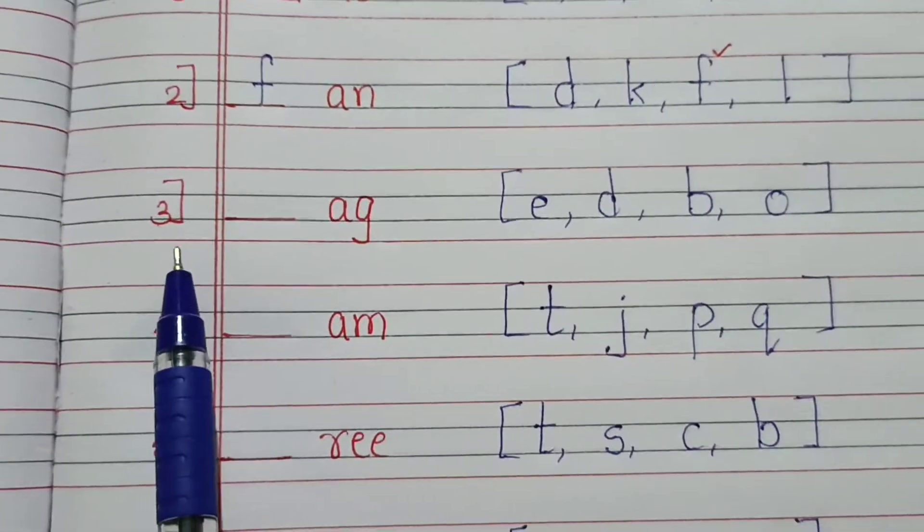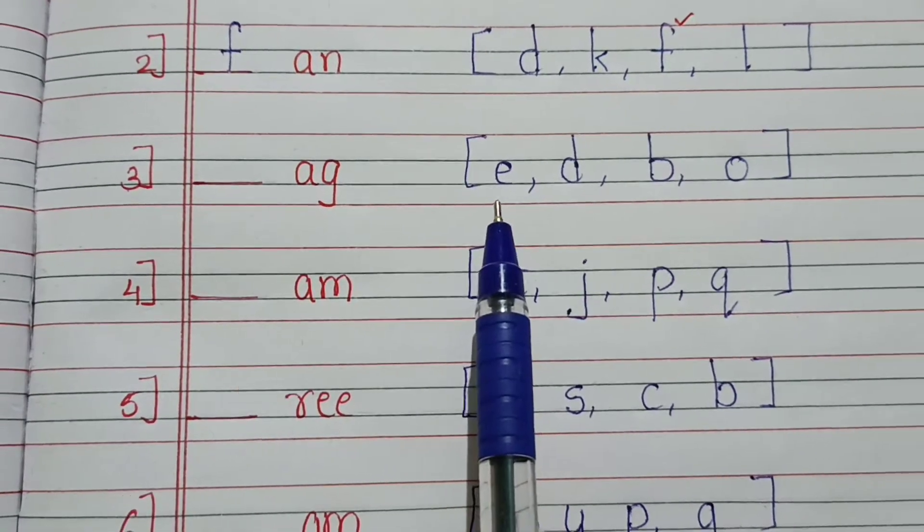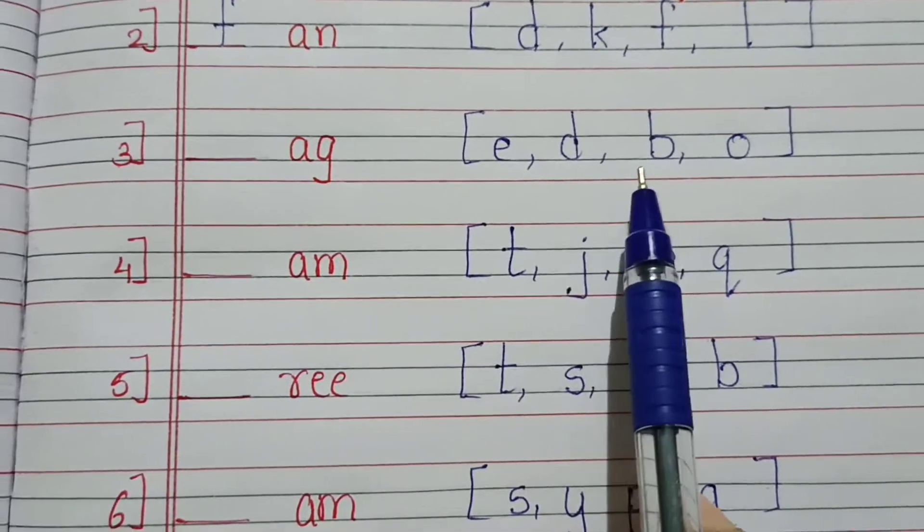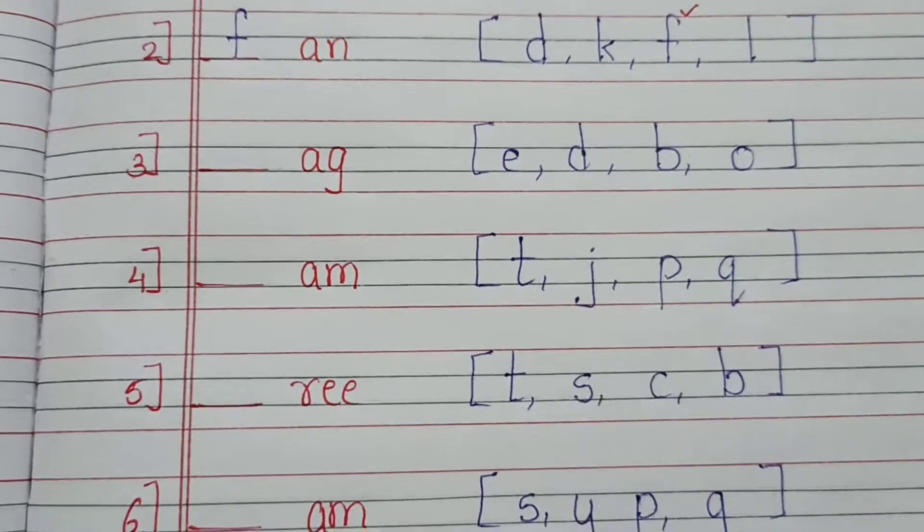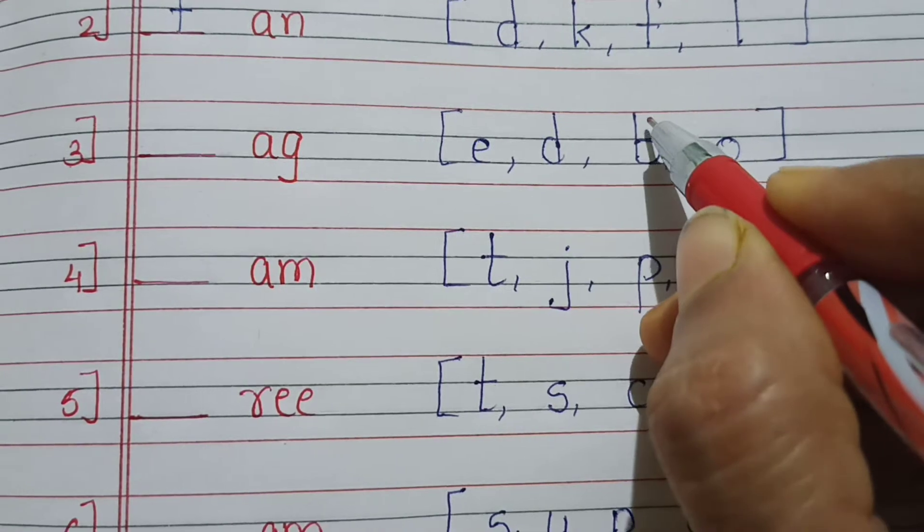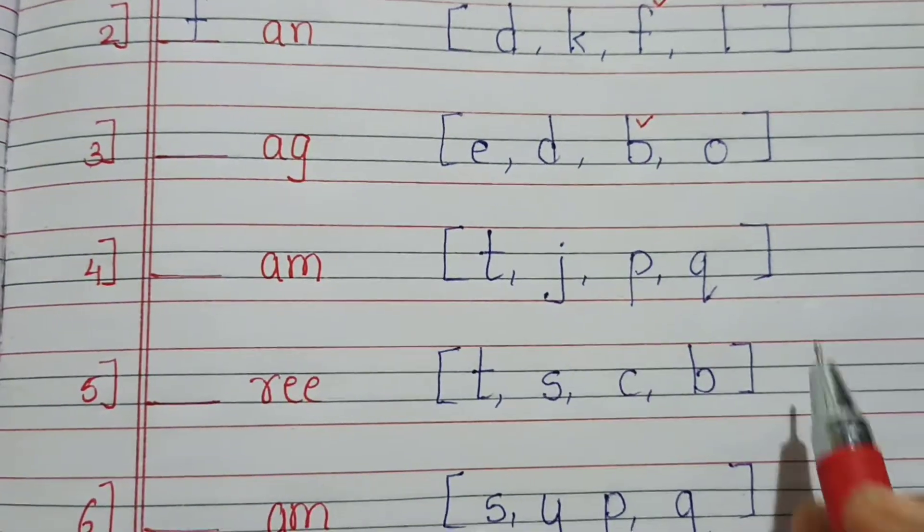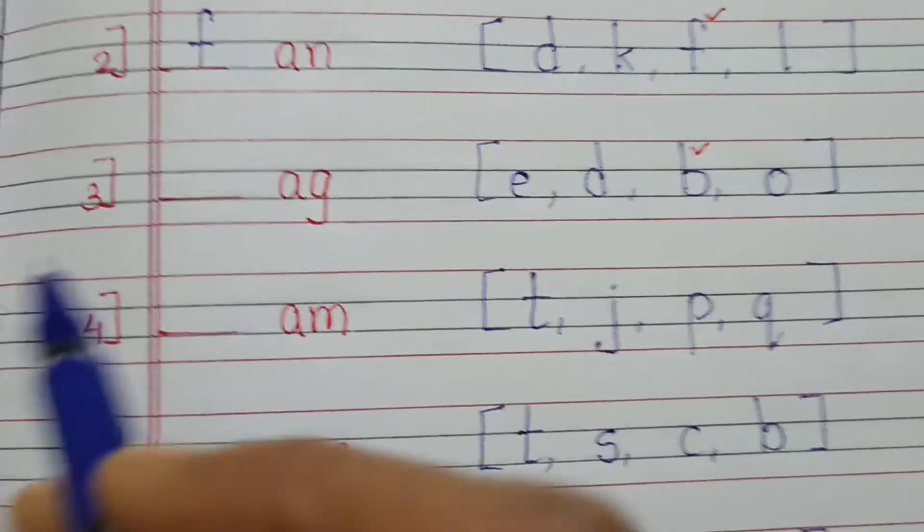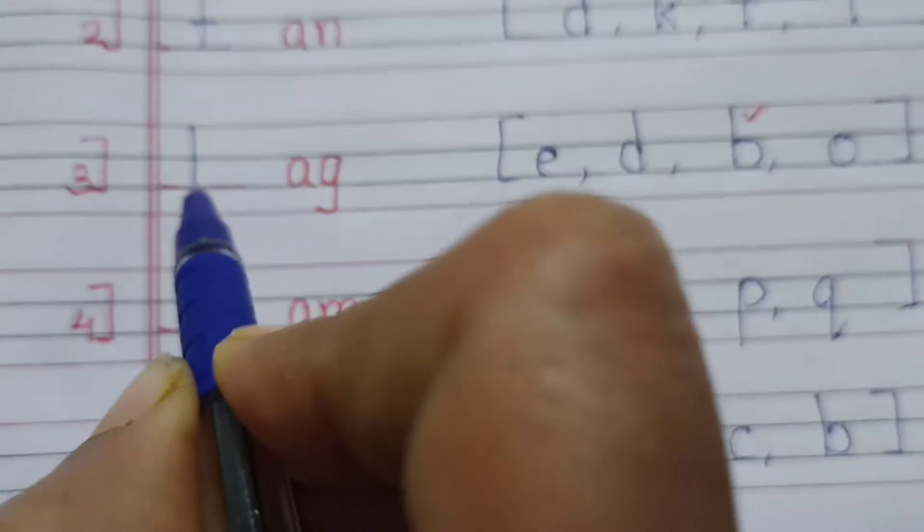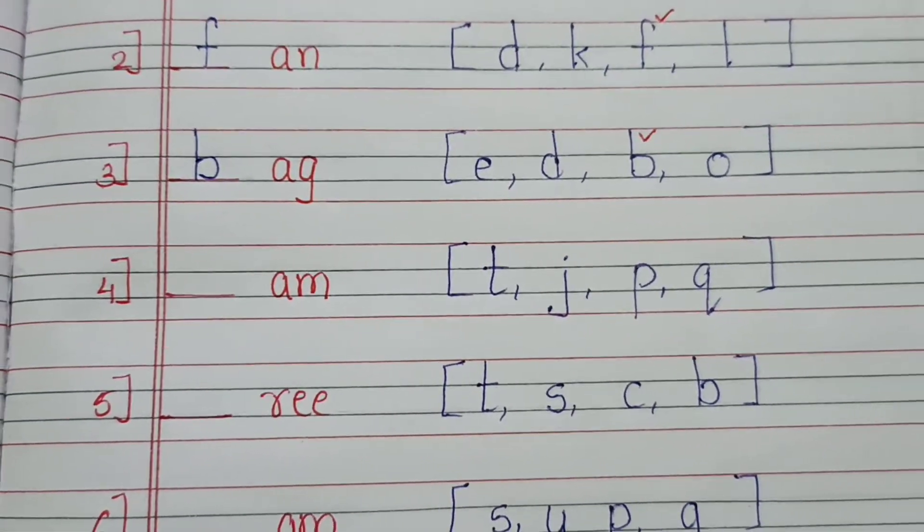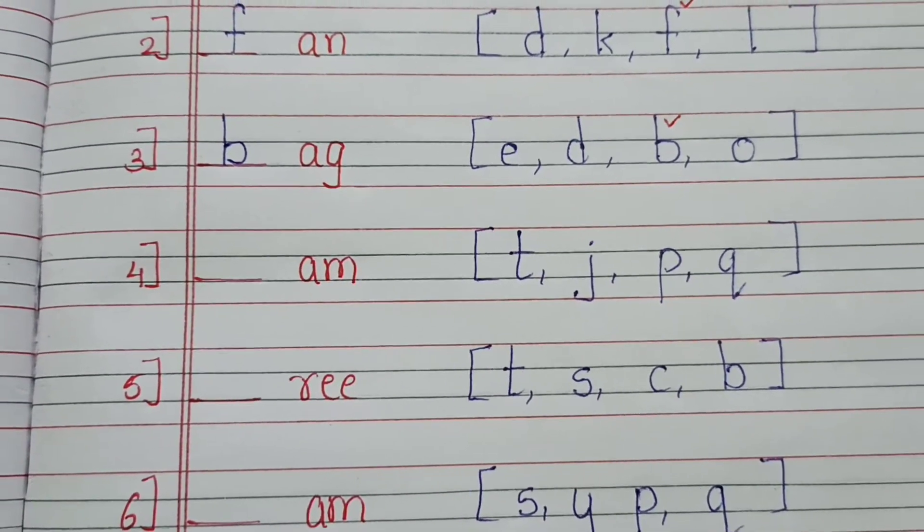Next, third one is dash A G. So we see here E, D, B, C. B, A, G. Yes, B, A, G is the correct answer. So what is the correct answer? B. So we will write here B. B, A, G, bag. So write B here children, B, A, G, bag.